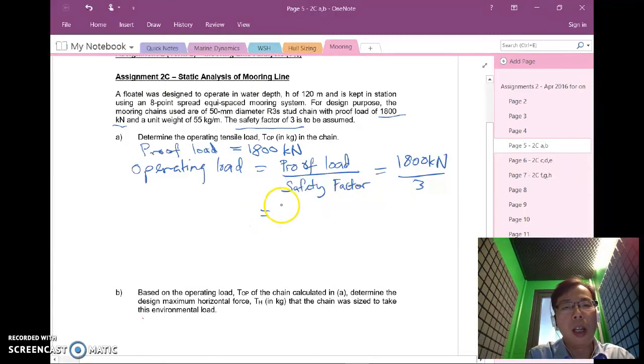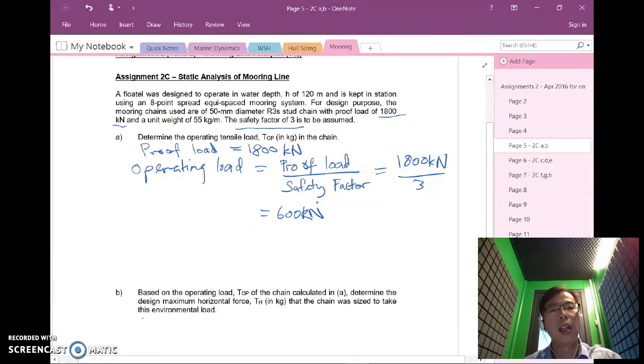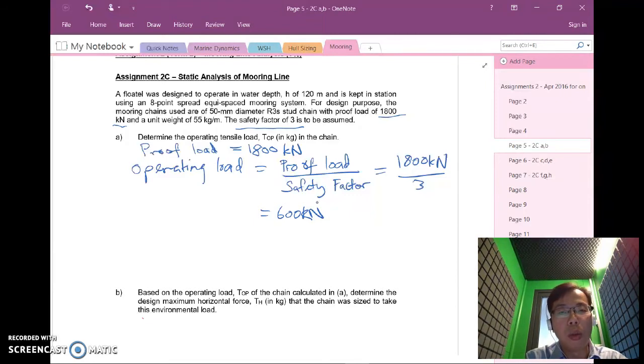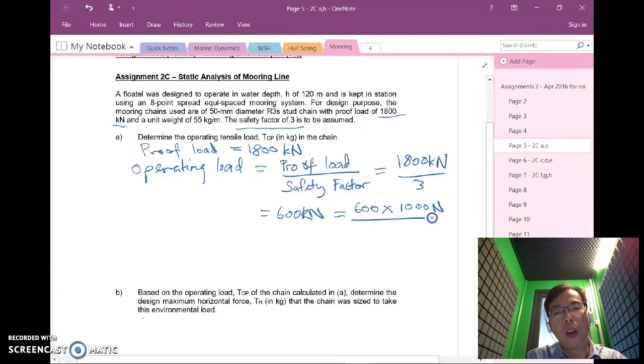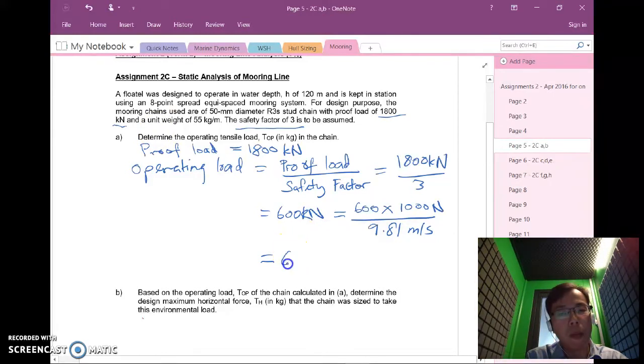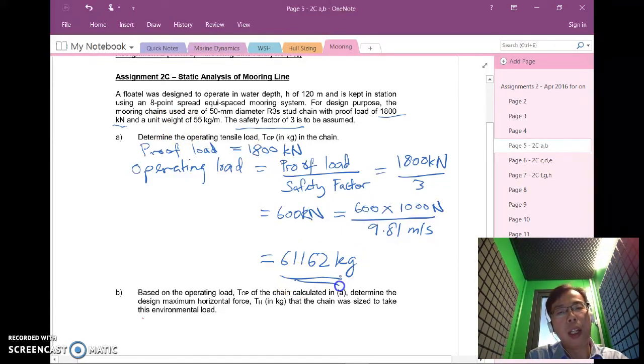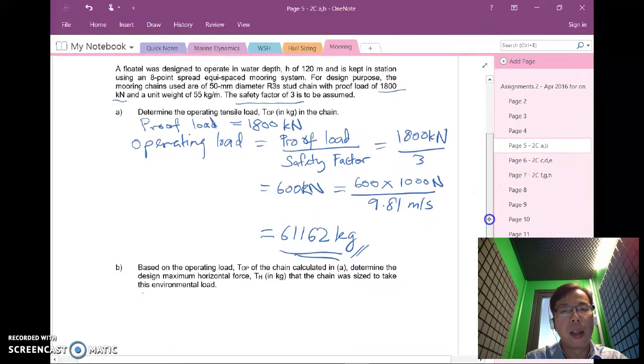So in this case 1800 kilonewtons divided by 3 gives me 600 kilonewtons. We need to express the answer in kilograms and that requires converting to kilogram force. How do I do that? I divide by the acceleration due to gravity which is 9.81. So 600 kilonewtons, I multiply by 1000 newtons over 9.81 meters per second squared and that gives me the value in kilograms. In this case it gives me 61162 kilogram and that will be the operating tensile load for part a.